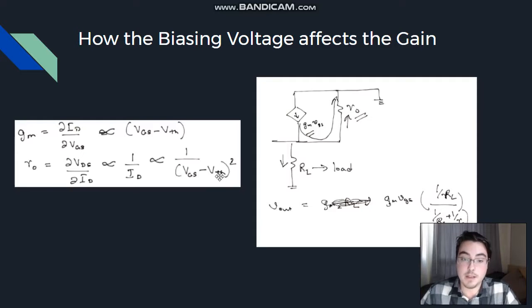So, GM is VGS minus VTH and our R0 is 1 over VGS minus VTH squared. Now, what does that mean? It means as our voltage bias increases, we're going to have a smaller and smaller R0. And we can see that conceptually through here. As we take an input signal over here, and if we raise our voltage bias, our R0 is going to shrink more and more,